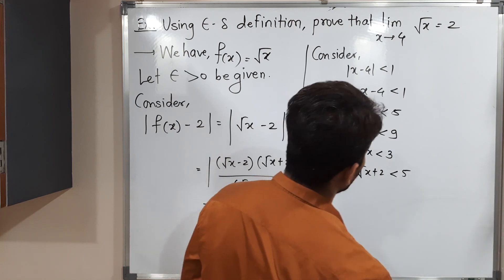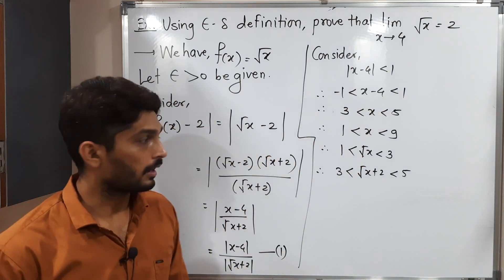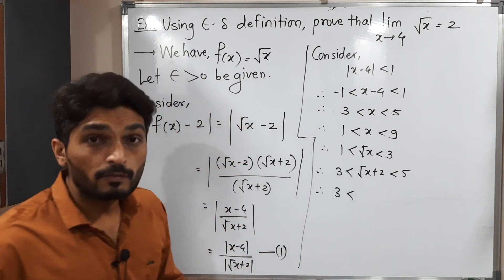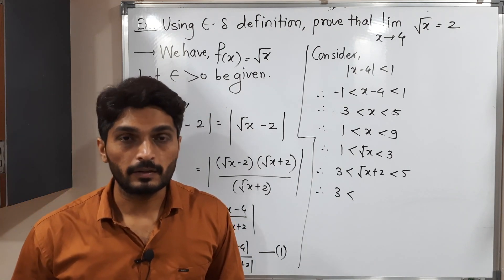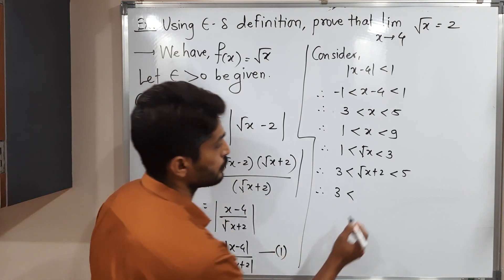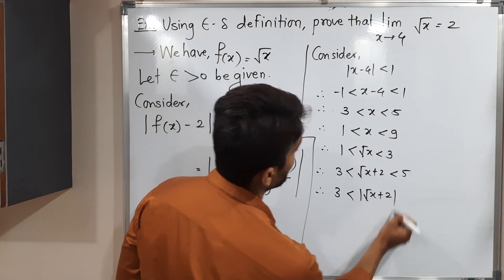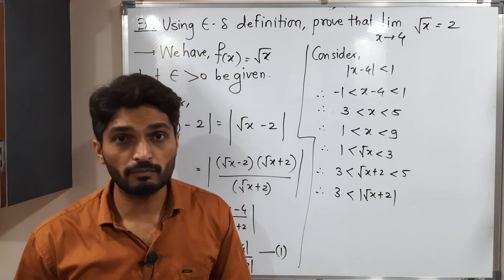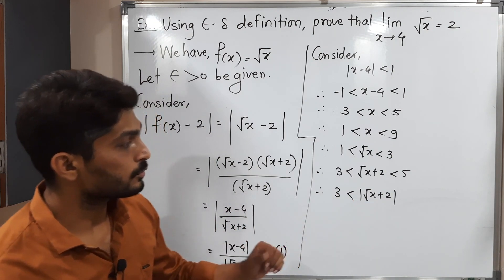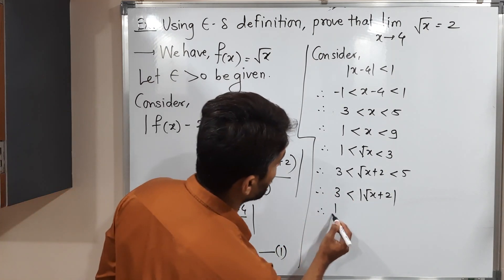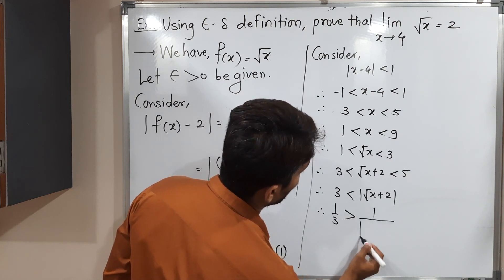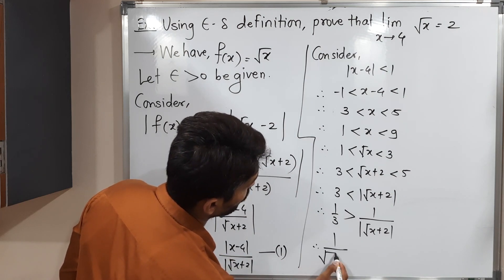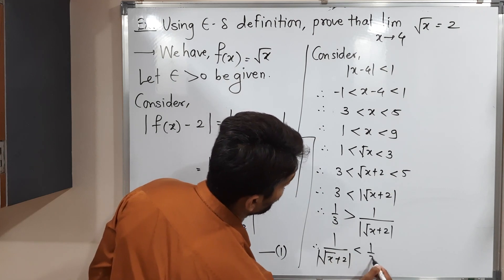Since root x + 2 is greater than 3, it is positive, so |root x + 2| = root x + 2. Taking the reciprocal, the inequality flips: root x + 2 > 3 implies 1/(root x + 2) < 1/3. Therefore, |1/(root x + 2)| < 1/3.